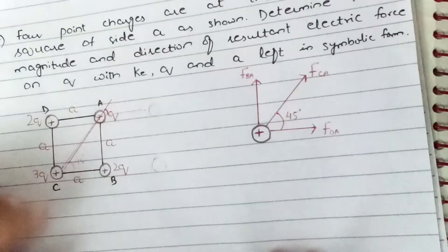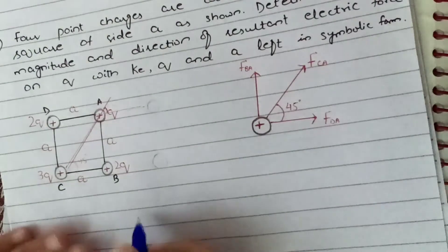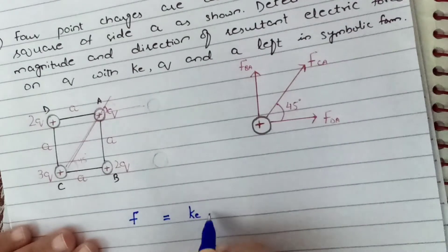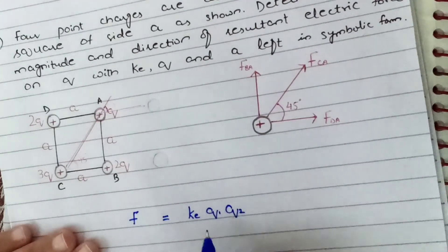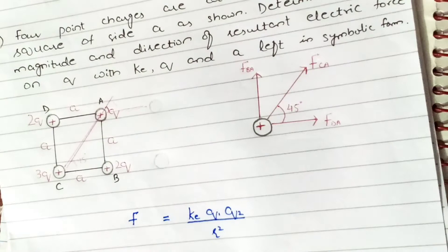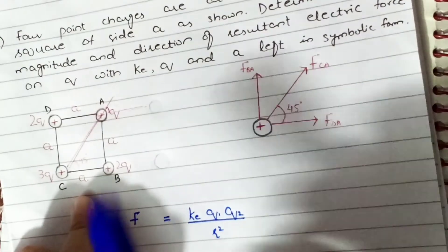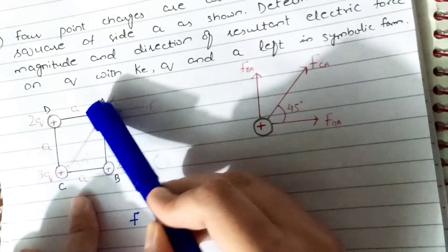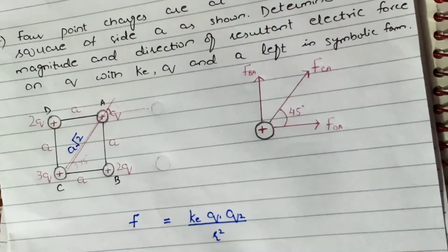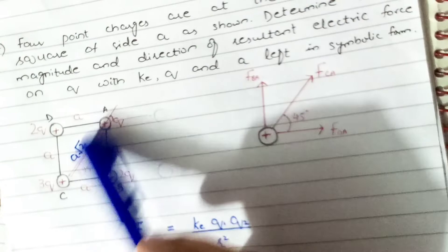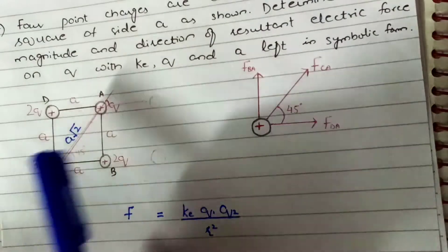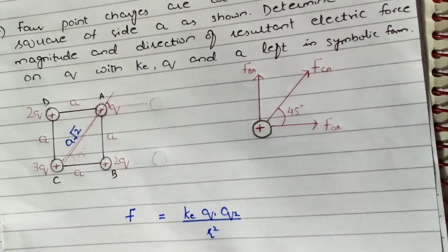Since this is a Coulomb's force problem, recall Coulomb's law: F = ke * q1 * q2 / r², where ke is Coulomb's constant, q1 and q2 are the charge magnitudes, and r is the distance between them. The two sides of the square are both a, so by the Pythagorean theorem, the diagonal distance between opposite corners is a√2.